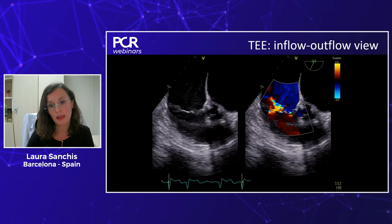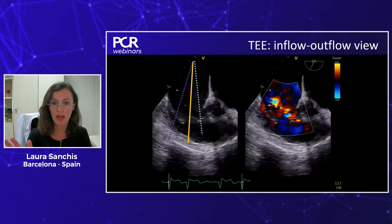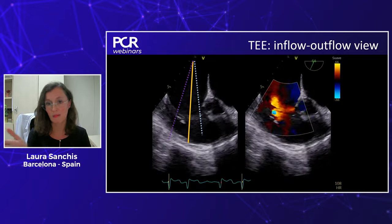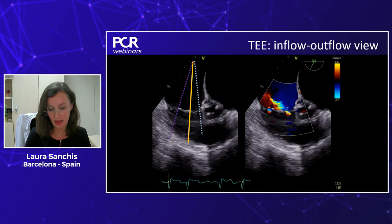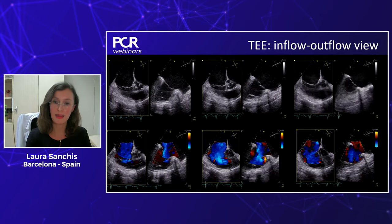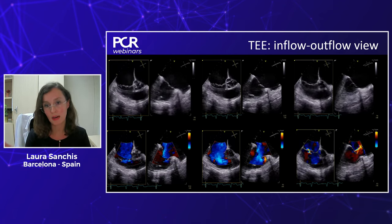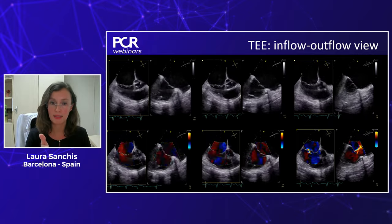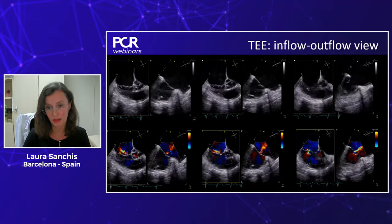The two most important views for the tricuspid valve are: first, the inflow-outflow view, where we have the aortic valve on the right and then the free wall, giving us the antero-anteroseptal and posteroseptal sides of the valve. If we put the biplane line over this valve, we can screen all parts of it — confirming coaptation along the anterior, middle, and posterior parts. This is important to know the coaptation gap, which we will discuss in detail.